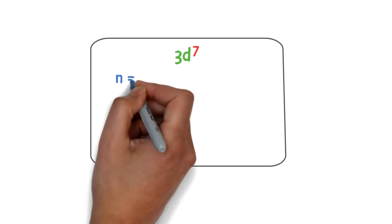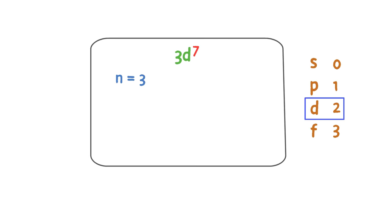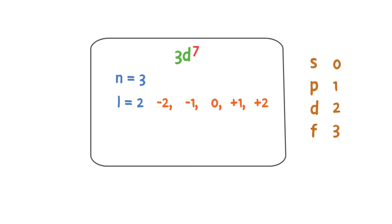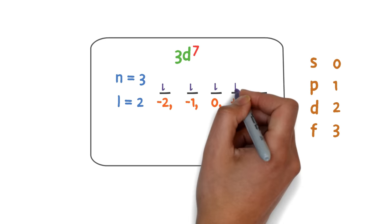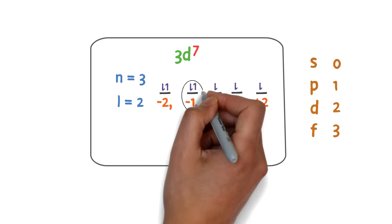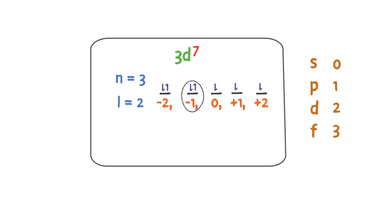The second example is 3d having seven electrons. Here n is equal to three, the value of d is two, so l is equal to two. The possible orbitals of d go from negative two to positive two: negative two, negative one, zero, one and two. I start placing electrons in the downward direction: first, second, third, fourth, fifth electron, then start placing electrons in the upward direction: sixth and seventh electron. The last electron is in the negative one orbital, so ml is equal to negative one. The direction of the last electron is upward, so ms is equal to positive one half.